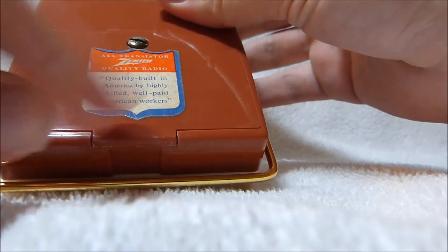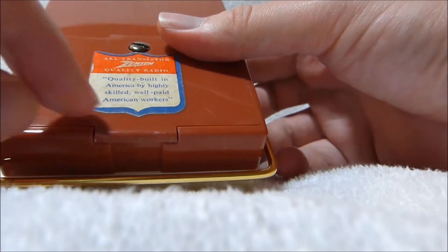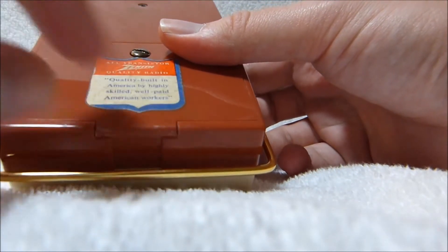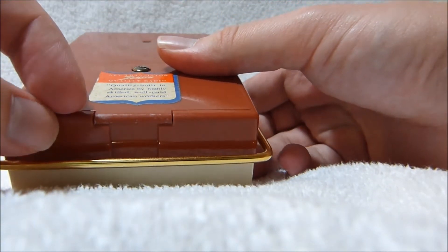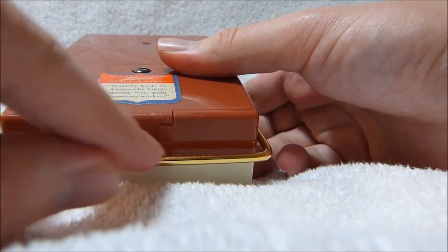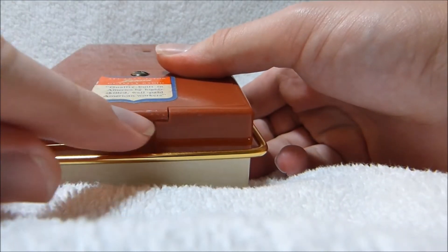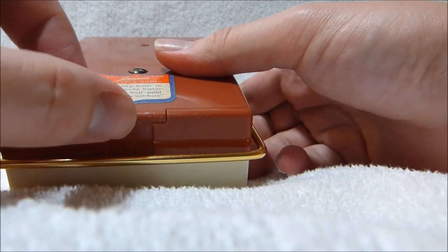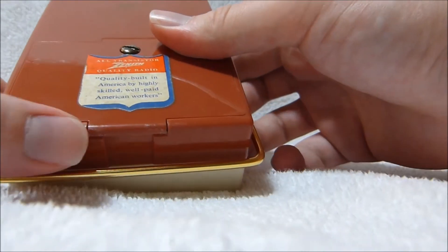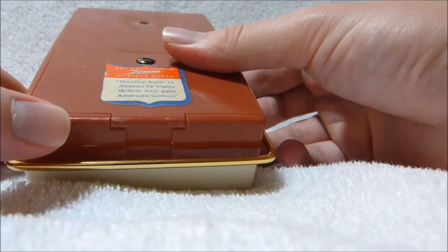This set, like a lot of other examples of this model, has a little bit of bending of the case here from the lid being put on incorrectly. Basically where this tab is caught underneath the edge of the plastic. If it gets left that way, it deforms after a while.